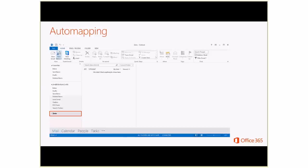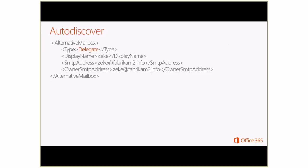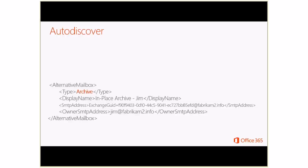Whether the mailbox is being added via auto-mapping or manually, this is how it looks in Outlook: underneath the user's main mailbox, they see the additional mailbox. There's no way from the account settings screen to know how that mailbox was added — but if it was auto-mapped, the additional mailboxes list would appear empty. Auto-mapping is done via AutoDiscover. When you look at the AutoDiscover response, you'll see an alternative mailbox with a type of 'delegate' for every user they have full access to. For an archive mailbox, the alternative mailbox type would be 'archive.' The SMTP address in that response is pretty ugly — you wouldn't want to add that manually.